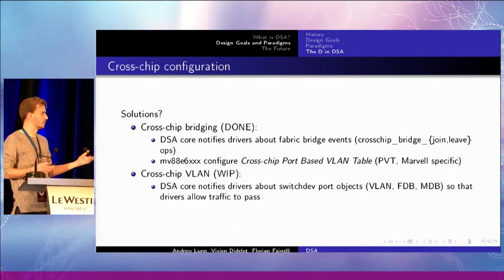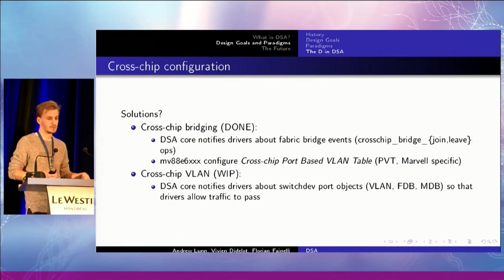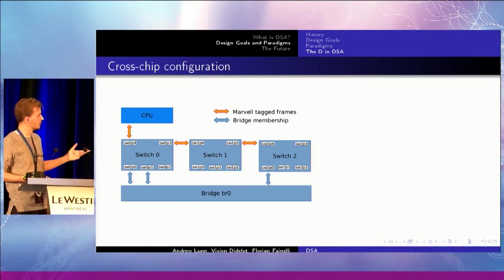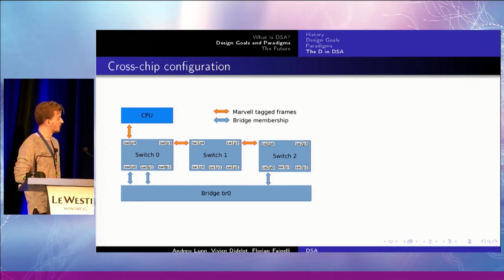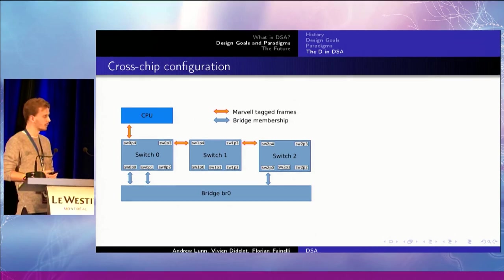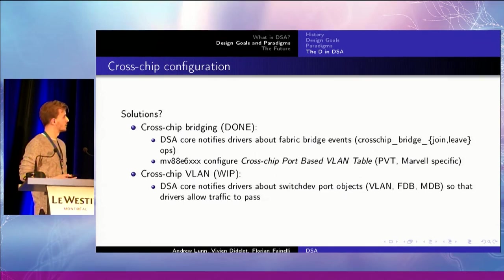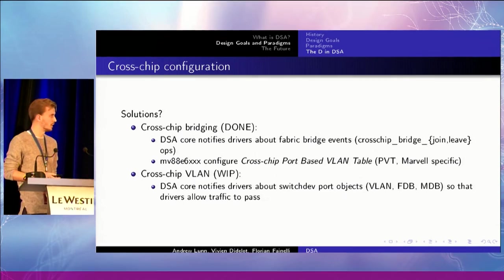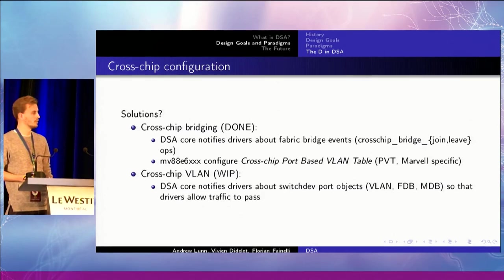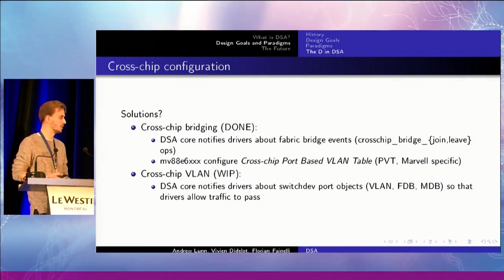For the cross-chip VLAN, that's my next step. I'm going to do the same thing — broadcasting switchdev objects. Whenever somebody adds VLAN 42 to the bridge, every chip of the fabric should receive that information and program the switch accordingly. That means even switch one will see that some ports of the bridge have VLAN 42, so it should program itself with VLAN 42 to let traffic pass through the DSA link. The same thing happens with FDB and MDB — MAC address entries and such. If you want to program static addresses for management port or whatever, that would be easy thanks to the switchdev abstraction model for the objects.